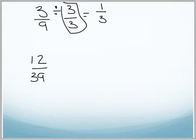So 12 over 39, let's test to see if they're divisible by 2. I know the numerator is divisible by 2 because it's even, but the denominator is not divisible by 2, so we can put that one out. Let's check 3, and we know that 1 plus 2 is 3, so the numerator is divisible by 3.